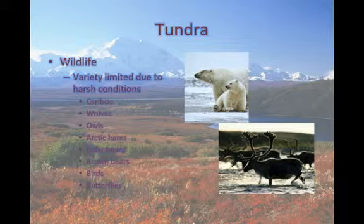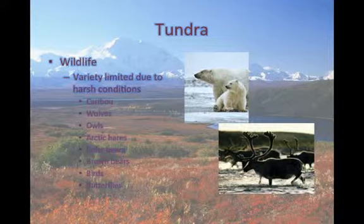The variety of wildlife on the tundra is very limited due to the harsh conditions. Certain wildlife include caribou, wolves, owls, arctic hares, polar bears, brown bears, birds, and butterflies.